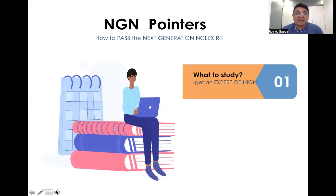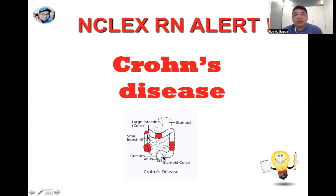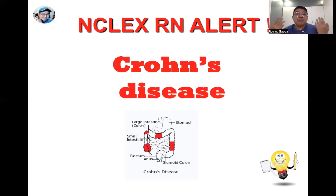My first pick for this set of concepts is Crohn's disease. Crohn's disease is an inflammatory bowel condition that affects the small and large intestines, although it can appear at any point in your gastrointestinal tract from the mouth to the anus. There are two things to remember about its pathophysiology: one, it involves inflammation, and two, it can be triggered by an autoimmune reaction.